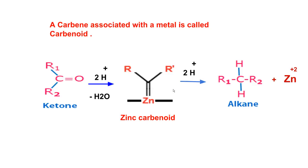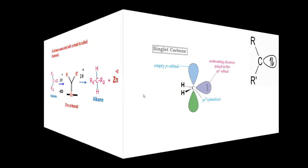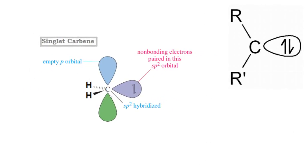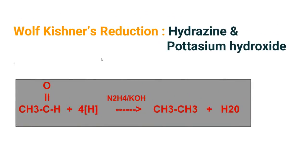A carbenoid is a molecular entity having the characteristics of a carbene associated with a metal. A carbene is a divalent carbon atom — it utilizes only two of the four bonds it is capable of forming with other atoms. It is a very reactive molecule. The zinc carbenoid is considered to be the intermediate during the Clemmensen reduction mechanism.